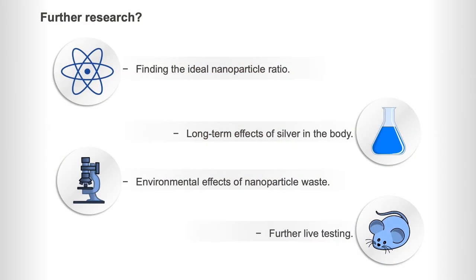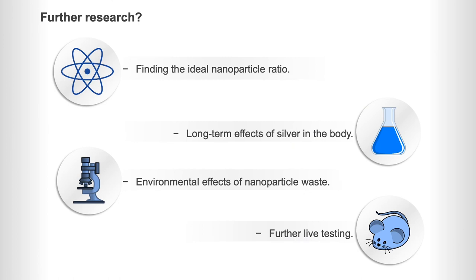So what further research can we look into? Firstly we need to find the ideal nanoparticle ratio — one with low toxicity and high effectiveness. We also need to look at long-term effects of silver in the body, so chronic exposure to silver. We also need to look at environmental effects once the nanoparticles have left the body. And the final thing is further light testing to make sure it's 100% safe. Thanks for listening.